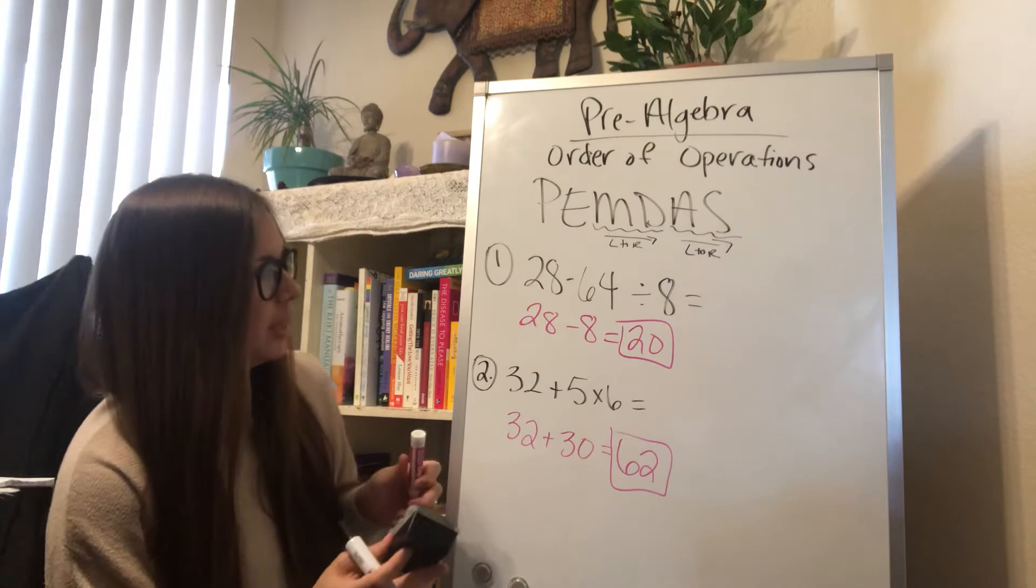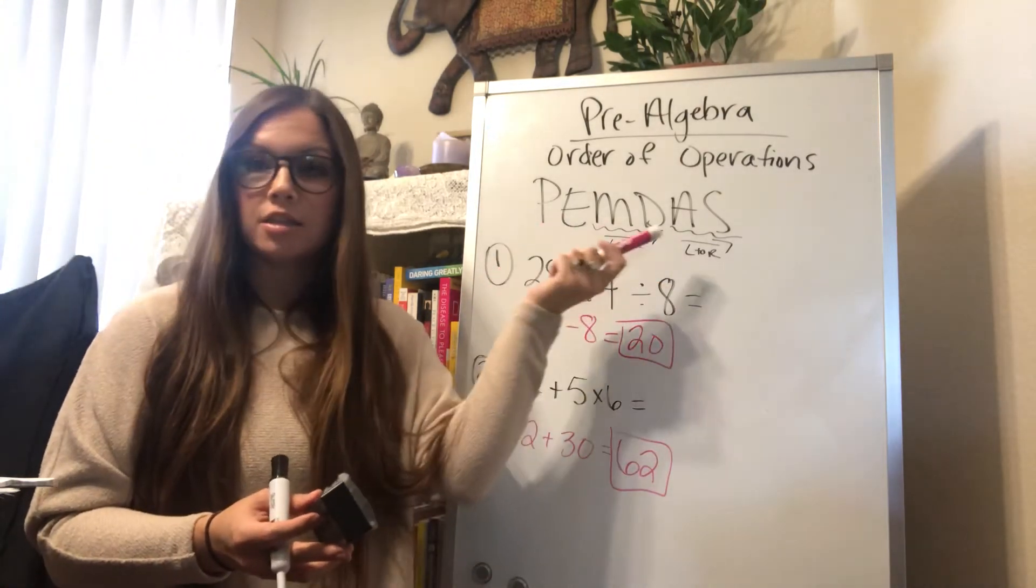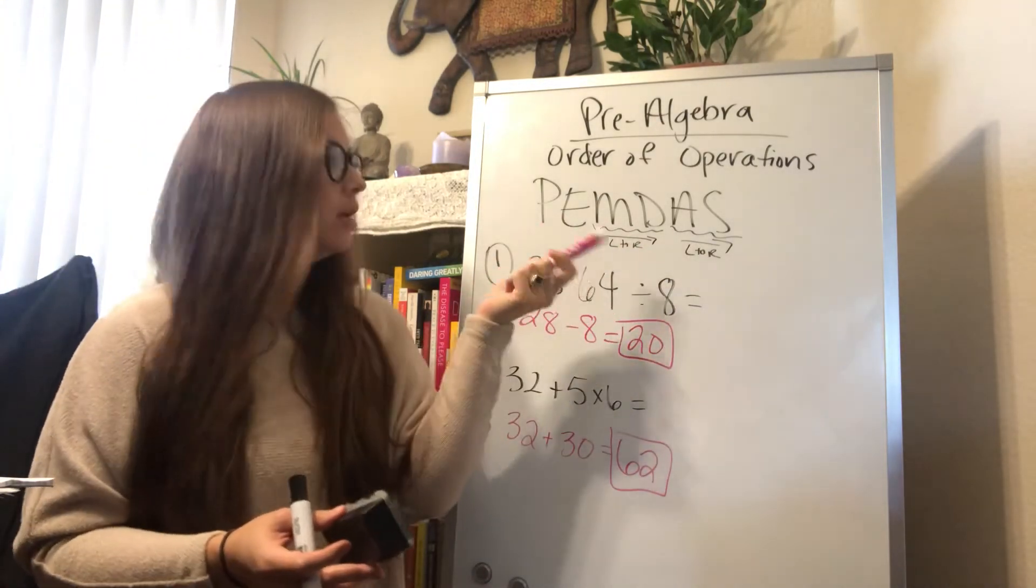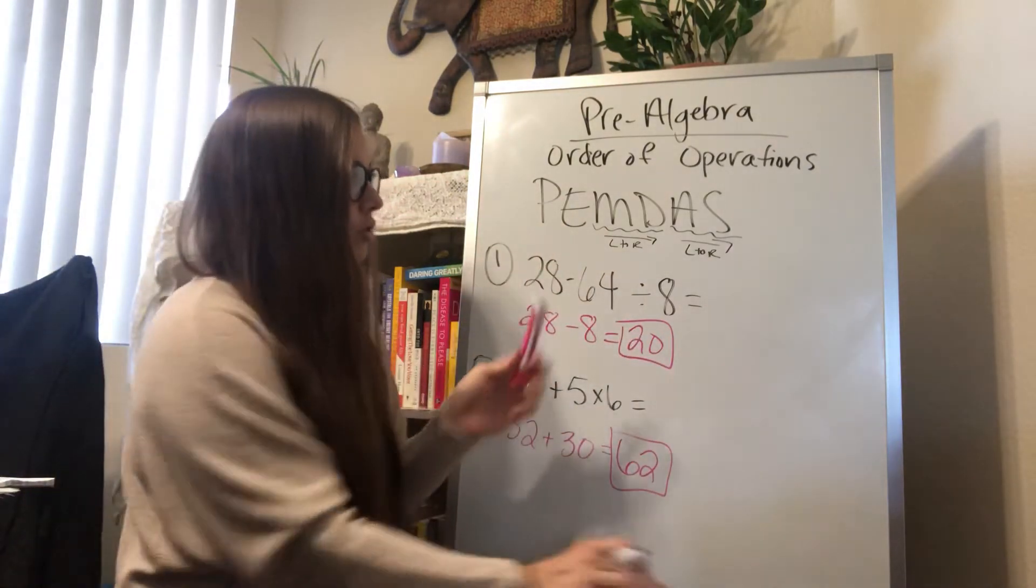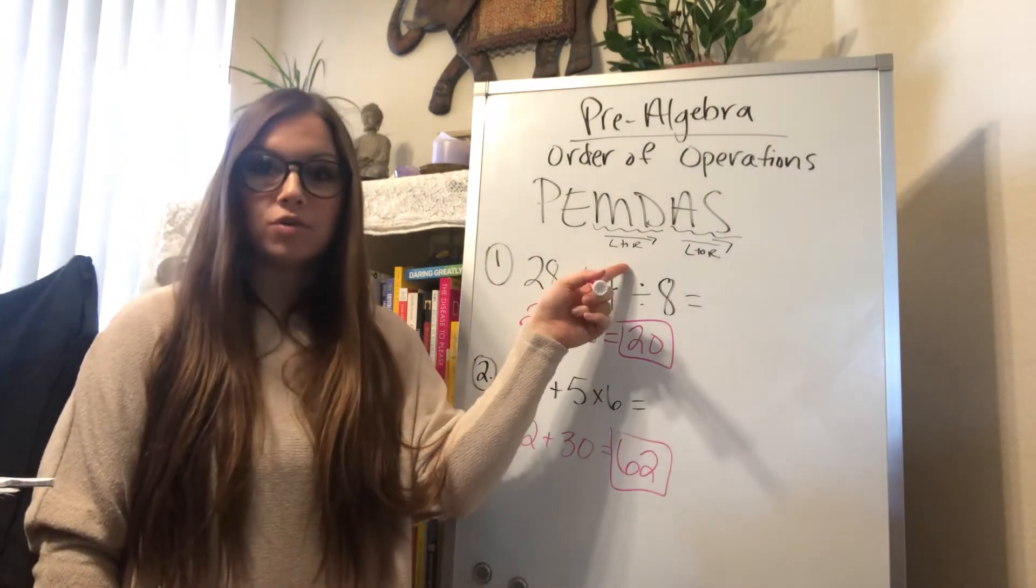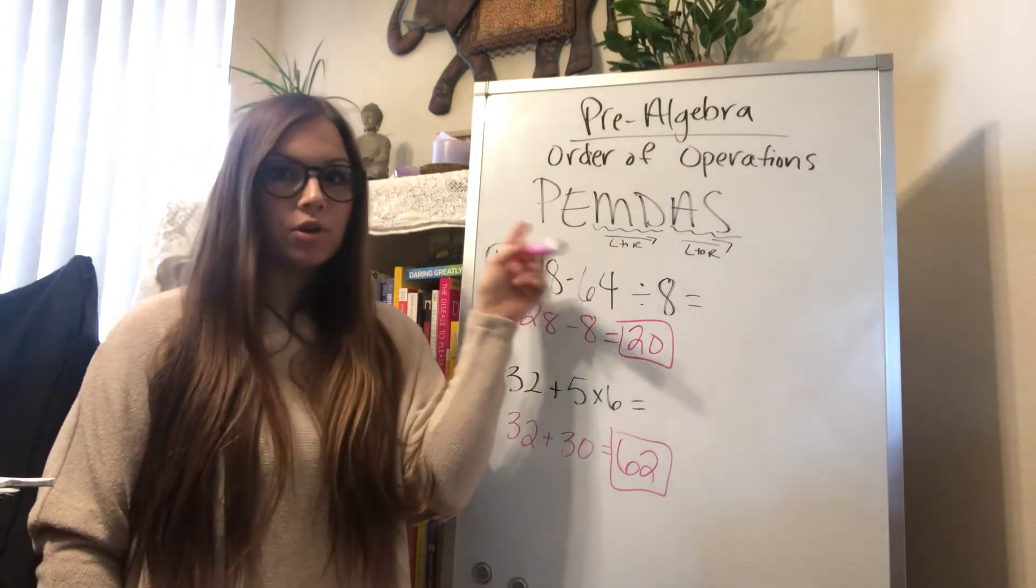So it's really that simple. You just follow your order of operations. I would suggest writing this at the top of your paper. It's going to help you out a lot in remembering the order. And also remember, you can multiply and divide left to right, but only after the parentheses and the exponents and before the addition and subtraction.